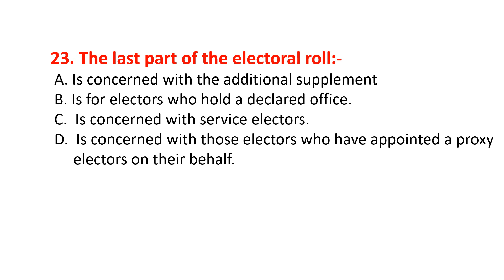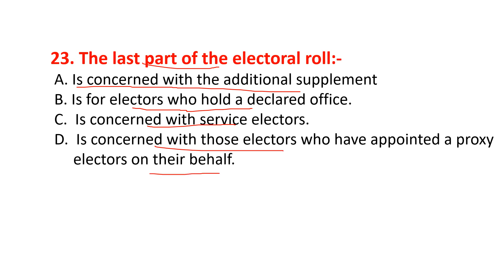The last part of the electoral roll — options include: is concerned with the additional supplement, is for electors who hold a declared office, is concerned with service electors, or is concerned with those electors who have appointed a proxy elector on their behalf. The correct option is option C — is concerned with service electors.